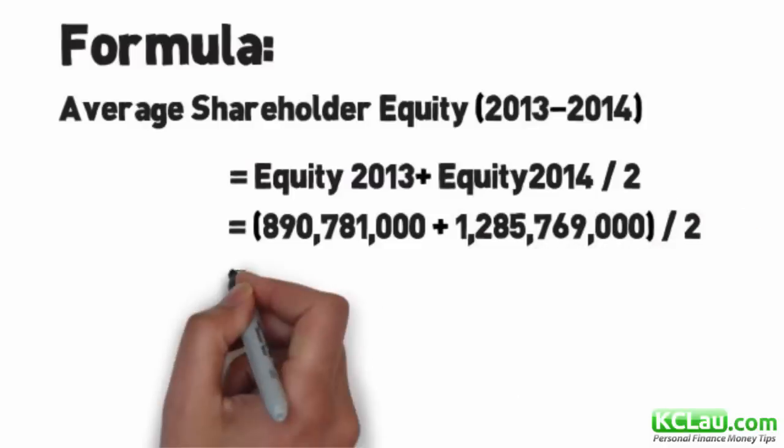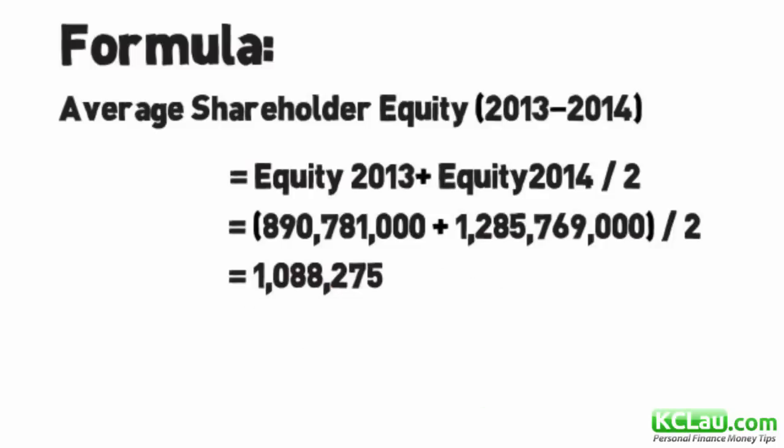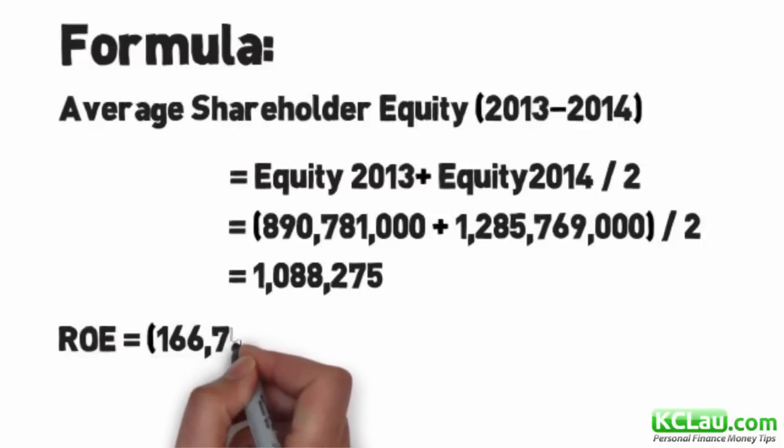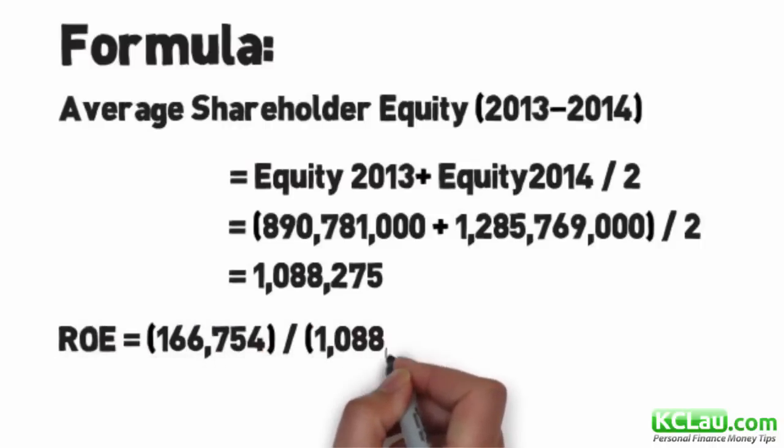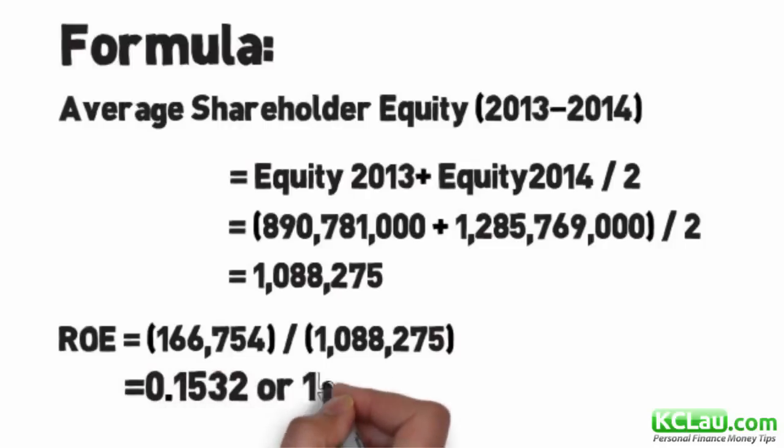The average shareholder equity is 1.09 billion. So the ROE will be 166 million divided by 1.09 billion, which equals about 15.32% return on equity. So this is the financial report of QL.